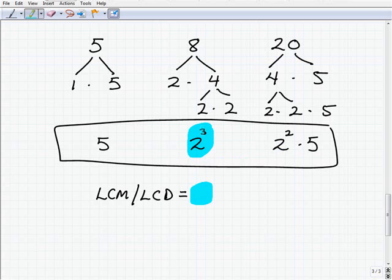So we have 2 cubed, 2 squared. We'll pick the highest power, so we need that. We also need a 5. 5 is over here, but we only need one 5, and that should do it. Let's go ahead and write this into our final answer.